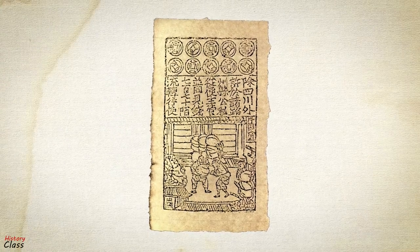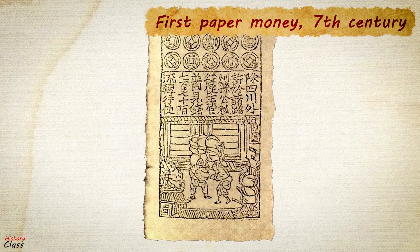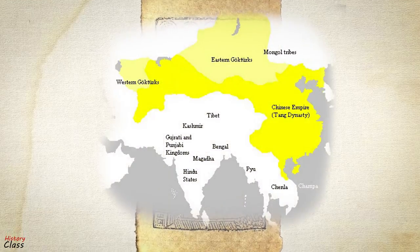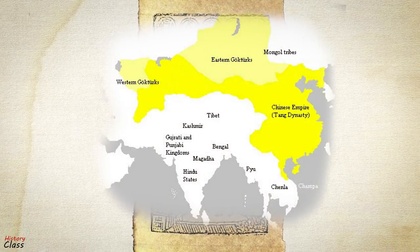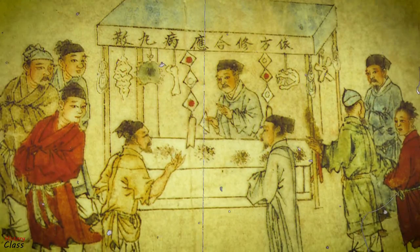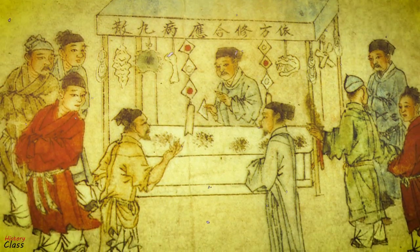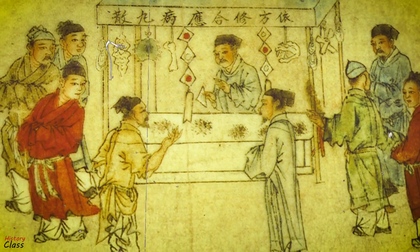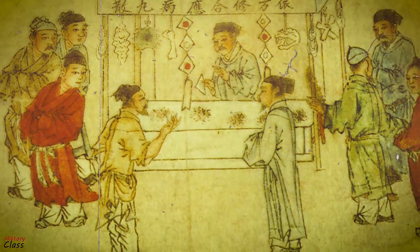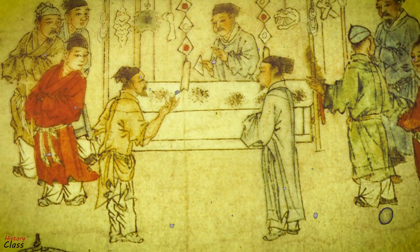In the 7th century, the first known paper money, or banknote, was first developed in China during the Tang dynasty. Its roots were in merchant receipts of deposit, as merchants and wholesalers desired to avoid the heavy bulk of copper coinage in large commercial transactions.